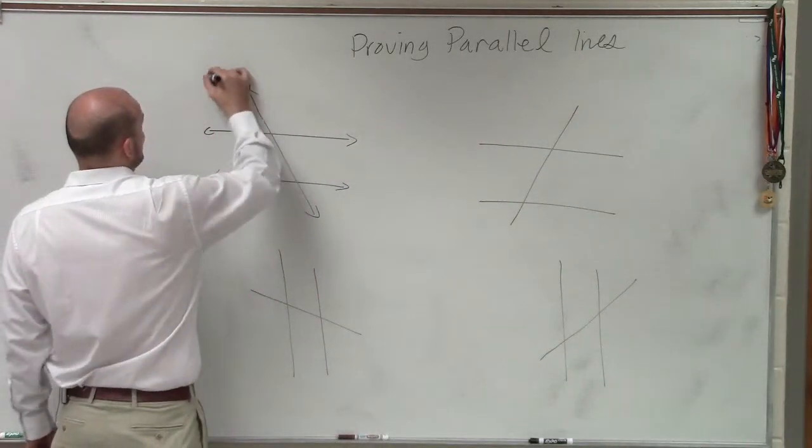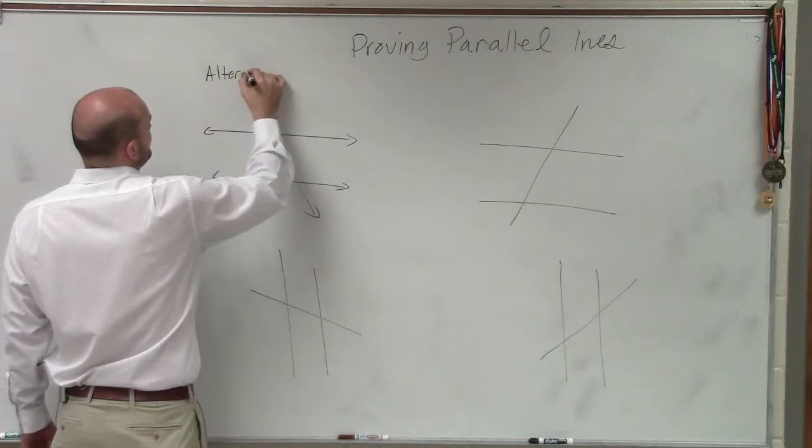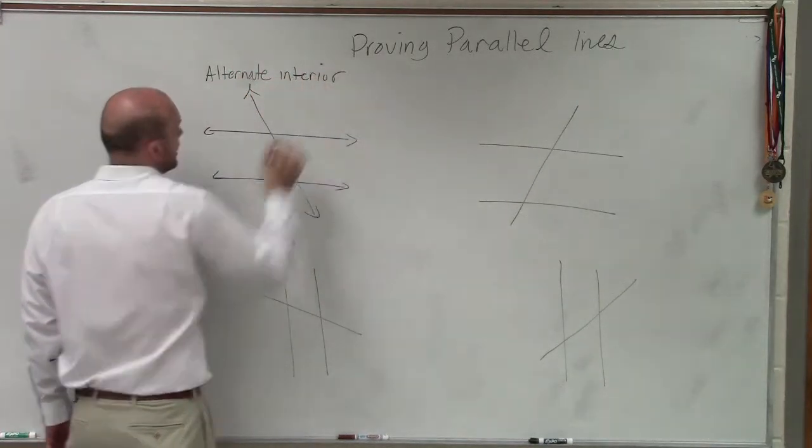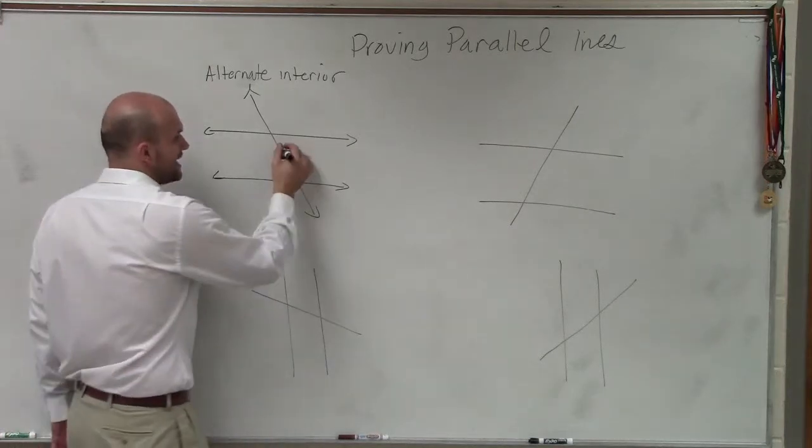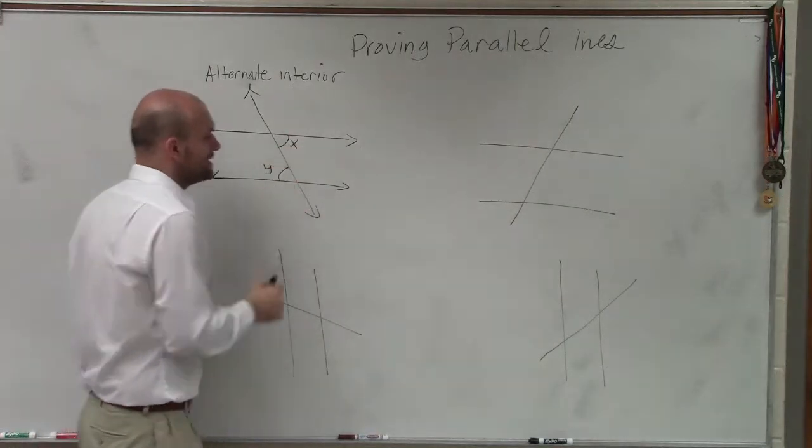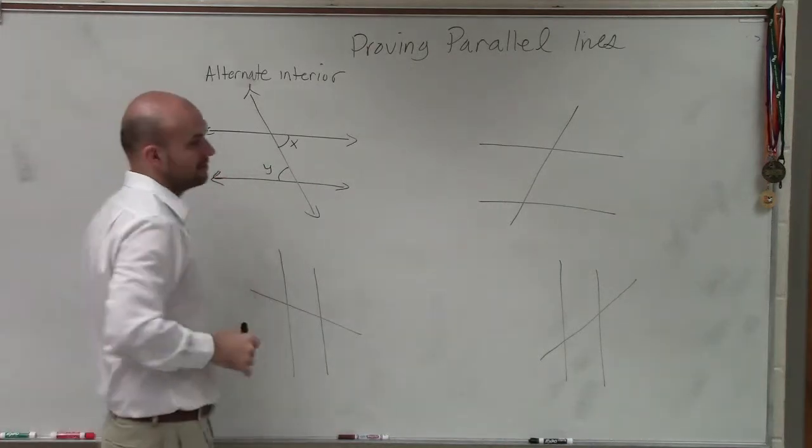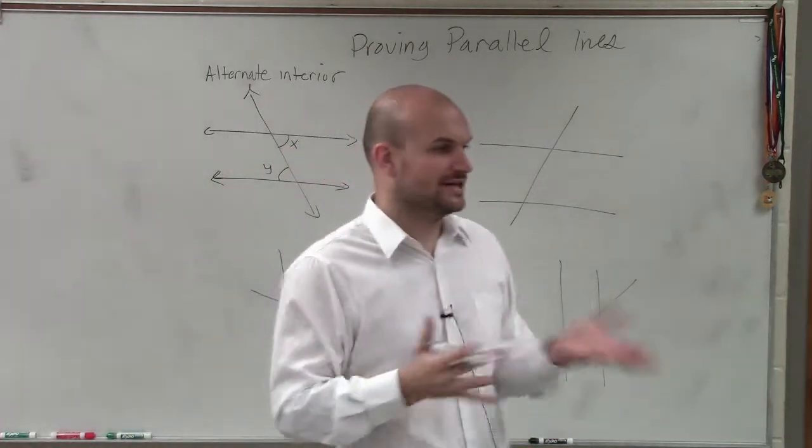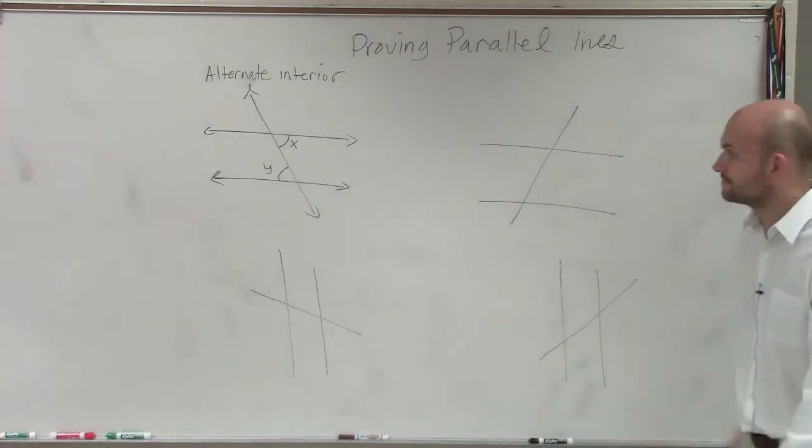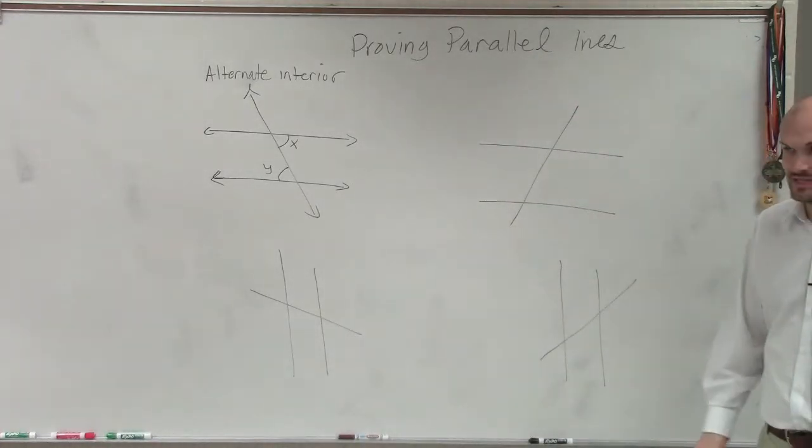Let's deal with alternate interior angles. Alternate interior angles are when you have angles that are both interior, and they alternate on the side of the transversal. That's an example of alternate interior angles.